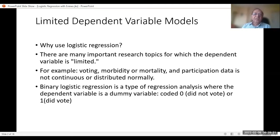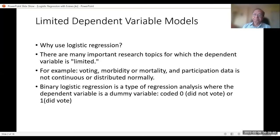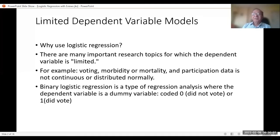In logistic regression, there are many important research topics for which the dependent variable is limited — limited in the sense that the answers of the respondents are yes or no. For example, will you vote for a particular party? The answer will be yes or no. Will the person die or remain alive? The answer may be yes or no, or sometimes expressed as a probability such as a 30% or 70% chance that the person will be alive.